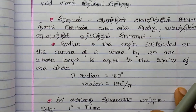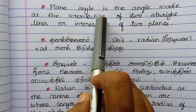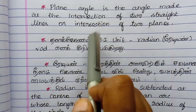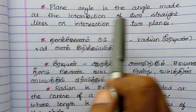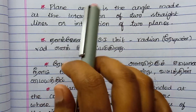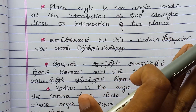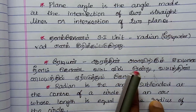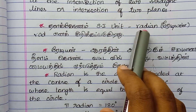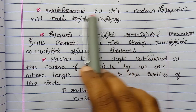A plane angle is formed at the intersection of two straight lines. The two straight lines intersect to form a plane angle. The SI unit of plane angle is the Radian, abbreviated as RAD. Radian means: the angle subtended at the center of a circle by an arc whose length is equal to the radius of the circle.